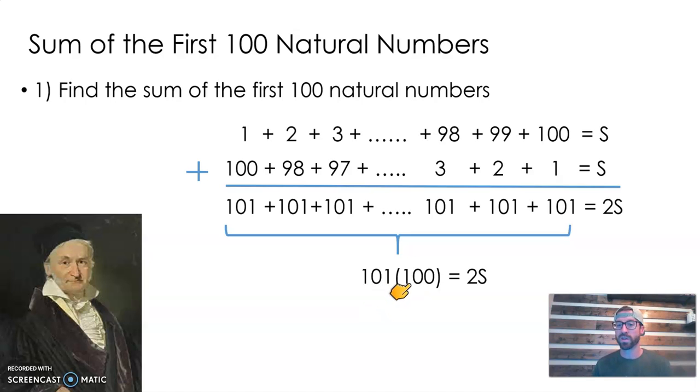So if I take 101 and add it 100 times, you could just do 101 times 100. That would give you twice the sum you wanted. Then you divide by 2 on each side. Evidently, this is how he did it. He got 5,050 for a sum.